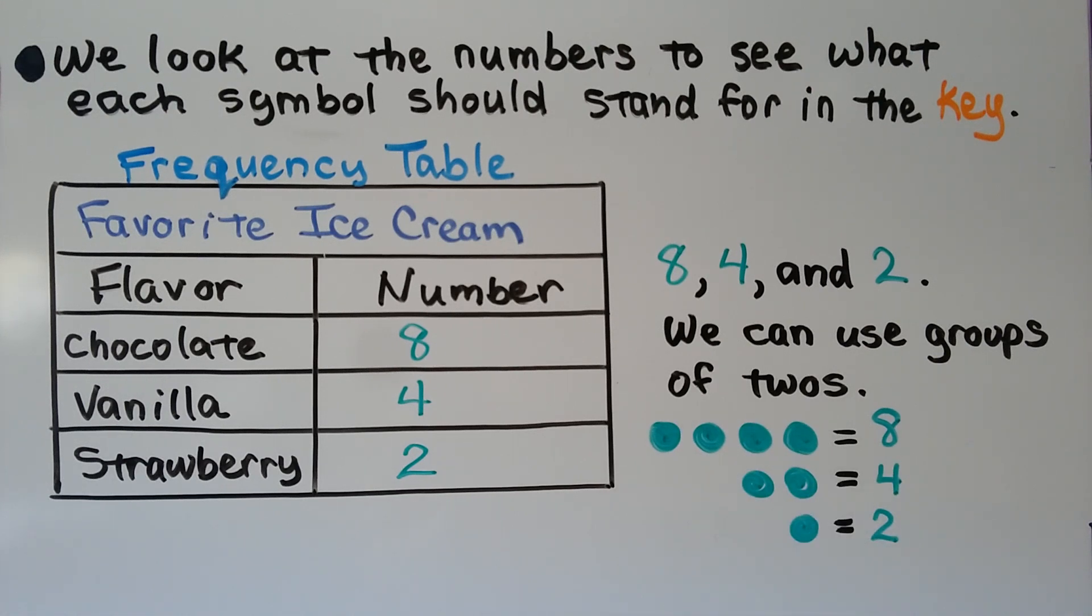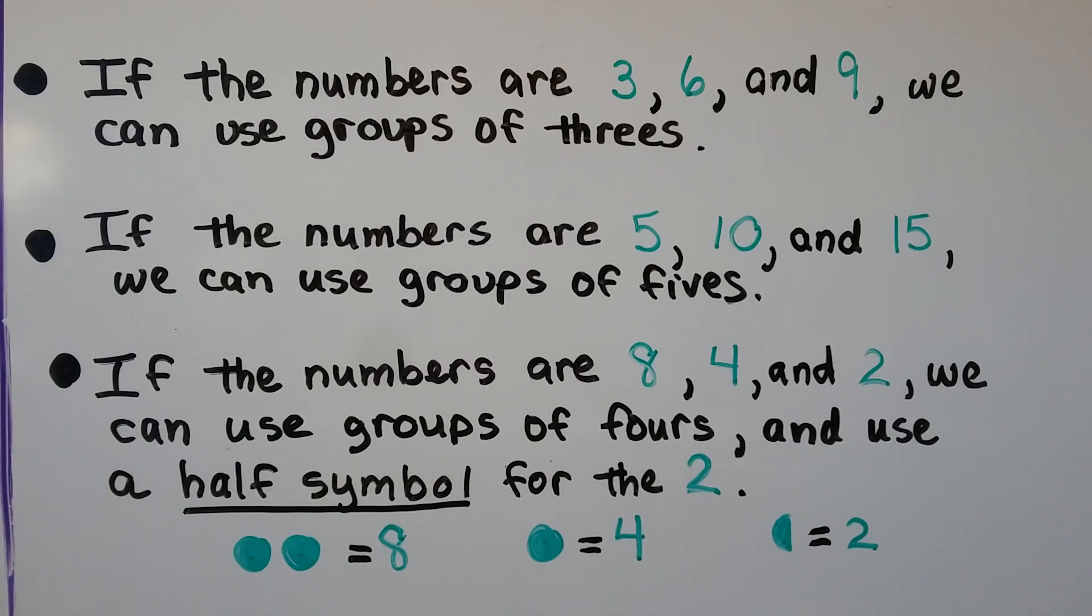Two green dots will equal four people, and one dot will equal two. If the numbers from our survey or frequency table are 3, 6, and 9, we could use groups of threes. One symbol could be 3, two symbols could be 6, and three symbols or pictures could be the 9.